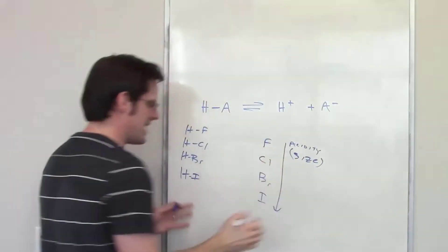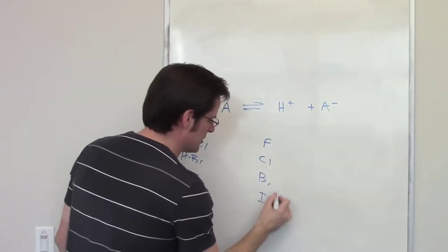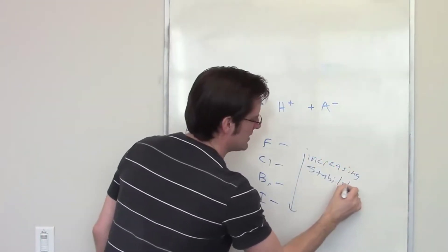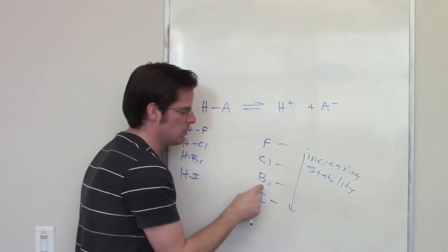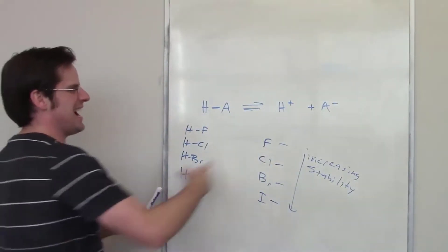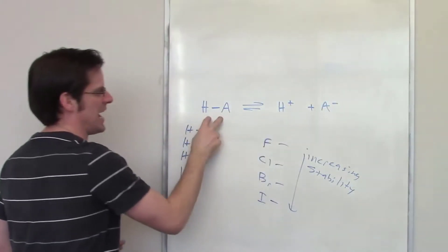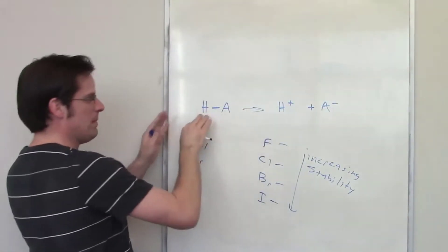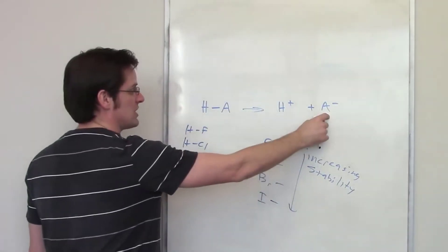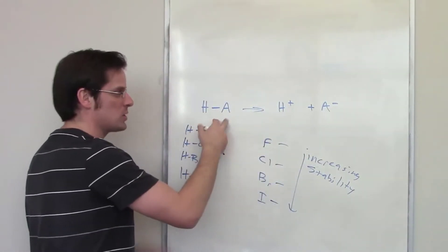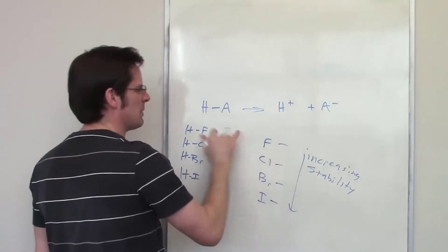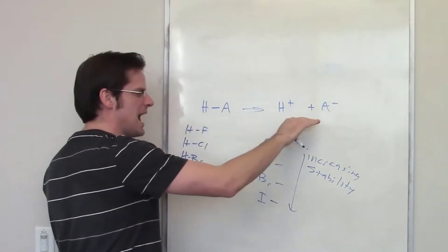Size must be the reason, which tells us that I⁻ must be more stable than Br⁻, which must be more stable than Cl⁻, which must be more stable than F⁻. If I've got an I⁻, that's really stable, which means HI is going to be wicked acidic and just go — whabam — and form I⁻. Br⁻ is not as stable as I⁻, but still stable enough that HBr also gives up a hydrogen — whabam — forming Br⁻. Cl⁻, not quite as stable, but still stable enough that HCl is a very strong acid — whabam.